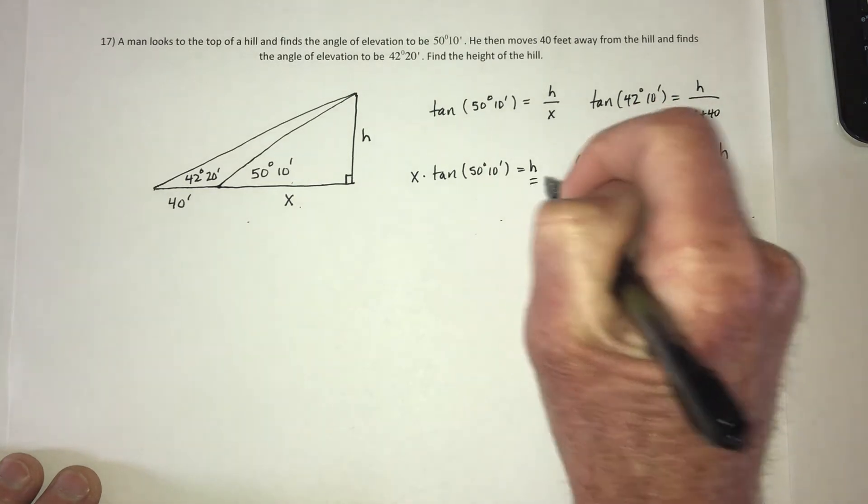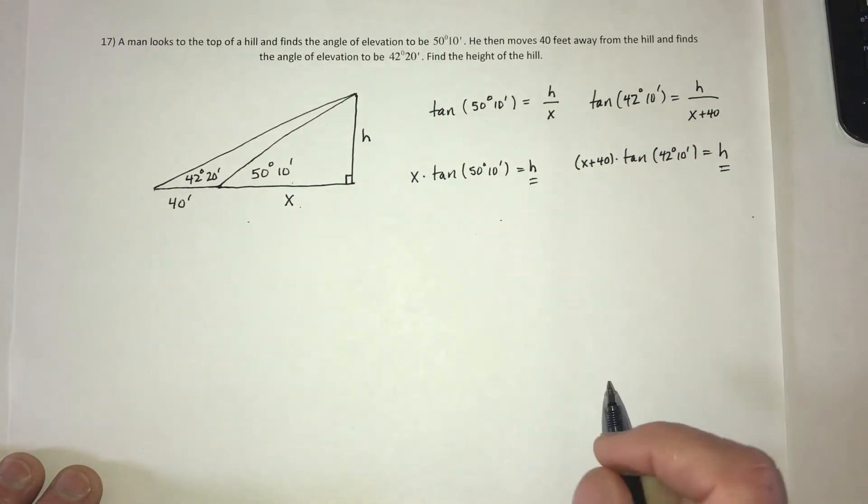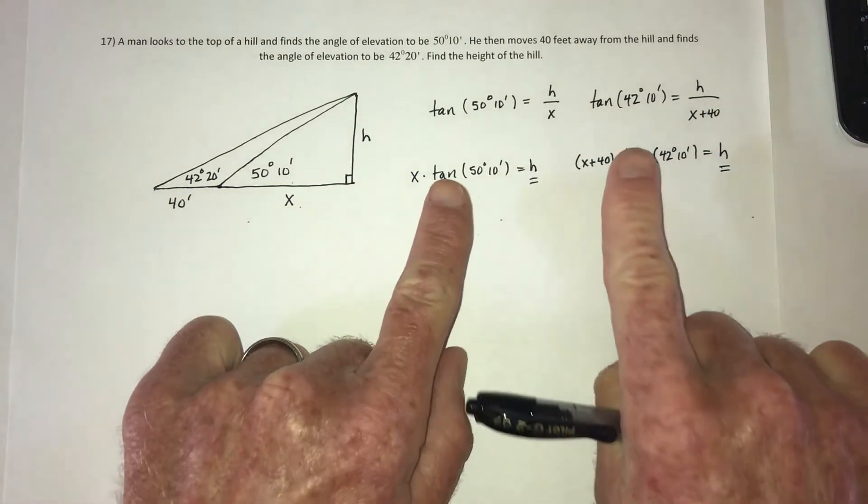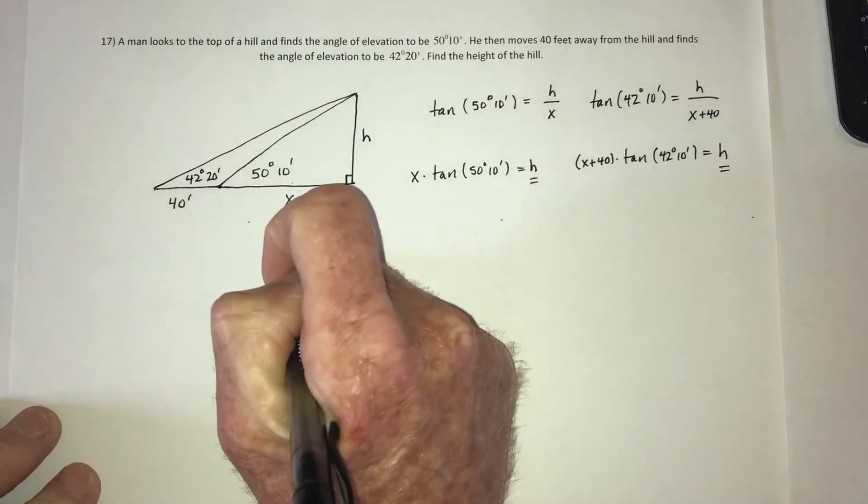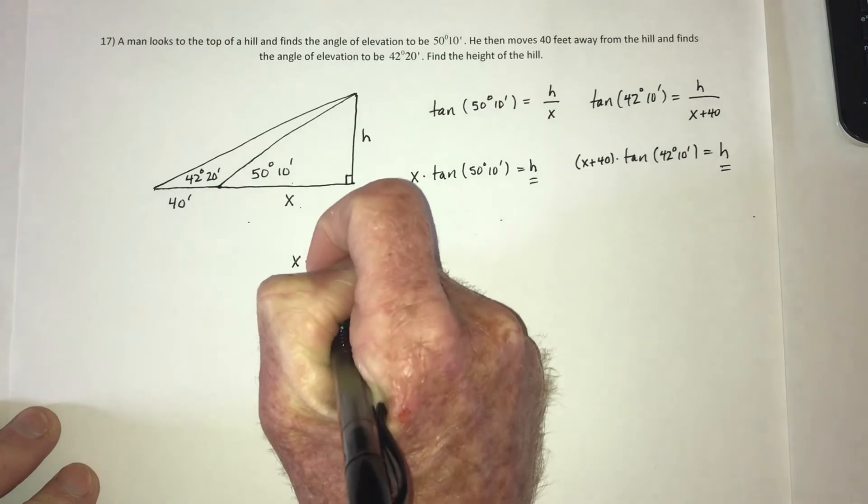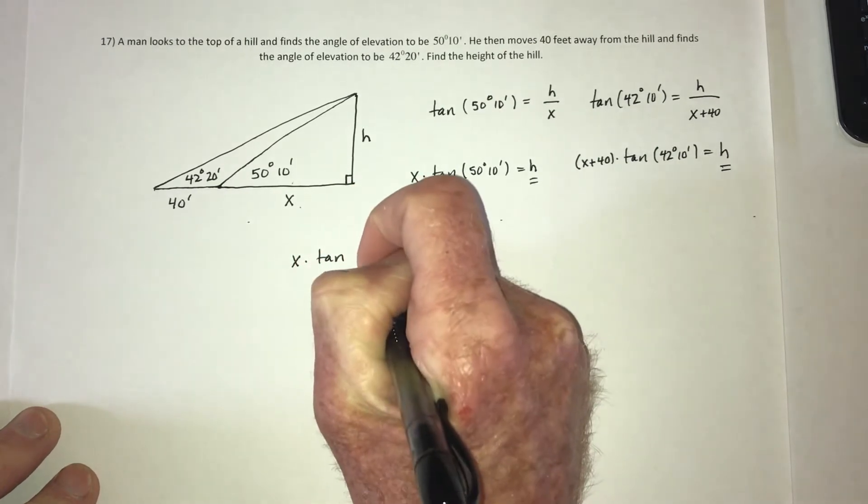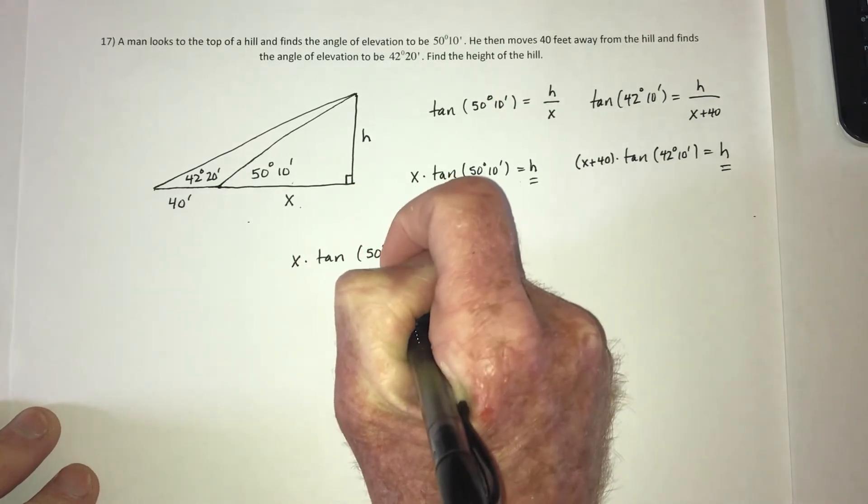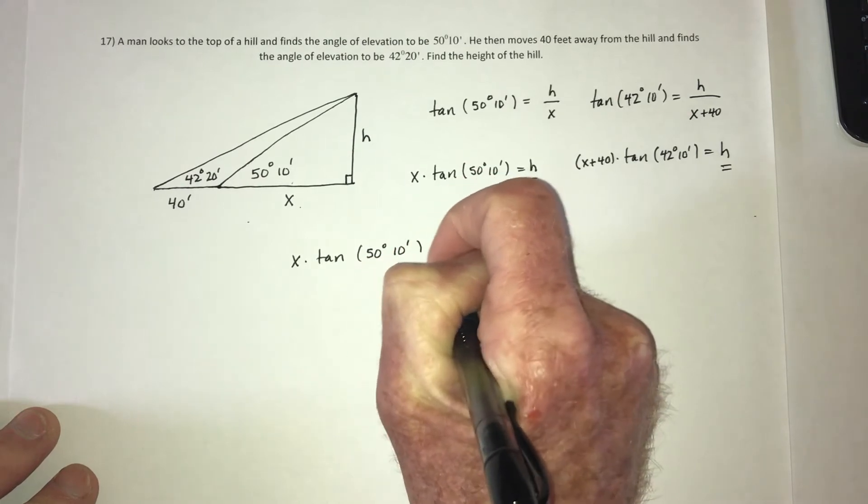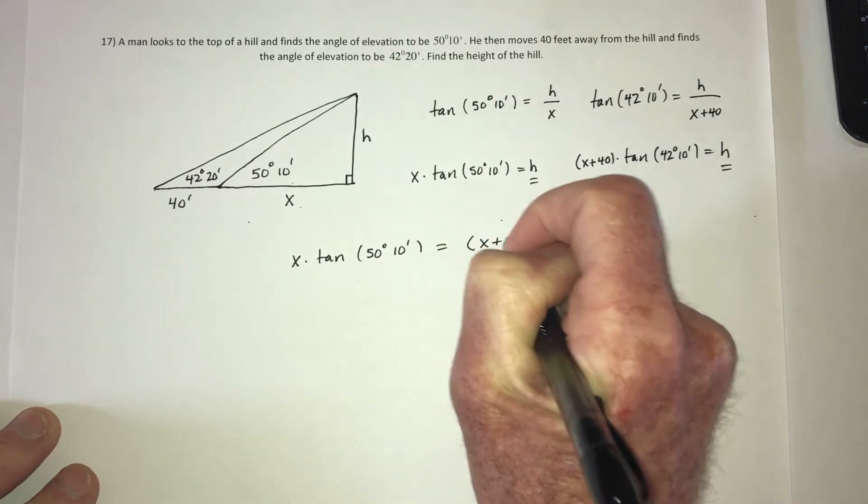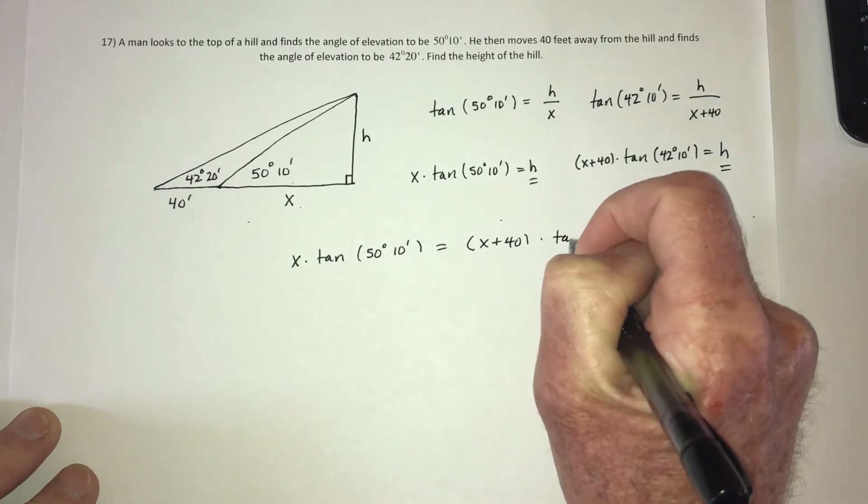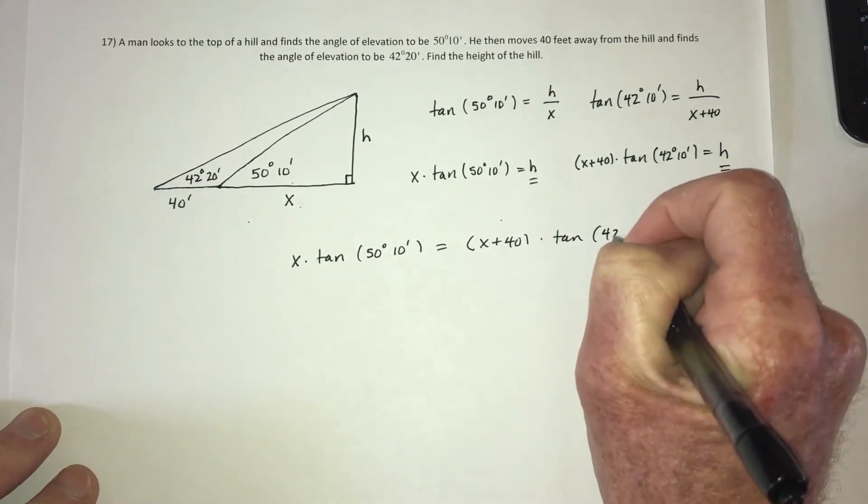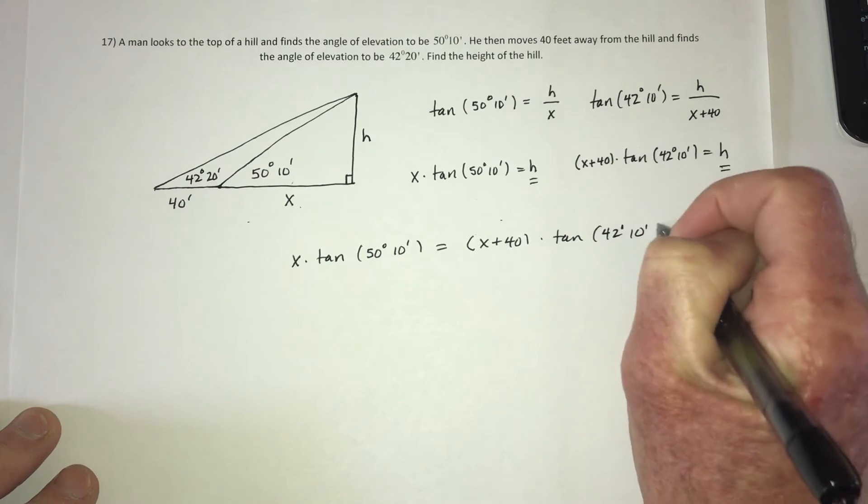Now, since they both are equal to h, that means they have to equal each other. So that means these two equal each other. So x times tangent of 50 degrees, 10 minutes, equals x plus 40 times tangent of 42 degrees, 10 minutes.